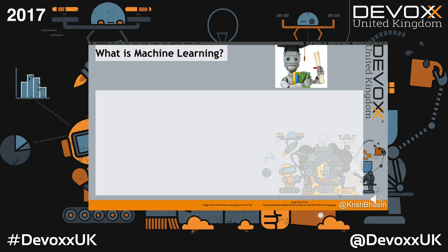It's useful to start by broadly defining what machine learning is. It's the thing that lets you move from a world where you say 'if the heat exceeds 80 degrees Celsius, we've got a problem, it's likely to fail' to a world where you say 'I've got all this data showing component conditions over time, some of them failed — let's use that to define what the pre-failure state is and act on that.' It's the idea of getting machines to provide insights or drive actions based on what the data says rather than what the code says.